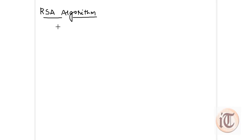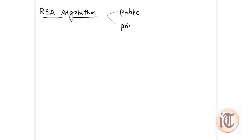Today we are going to discuss the most important topic in cryptography: the RSA algorithm. This algorithm is the most widely accepted and implemented general-purpose approach to public key encryption. Public key encryption means that we have two keys — one is the public key and another one is the private key. This algorithm falls under the category of public key encryption.